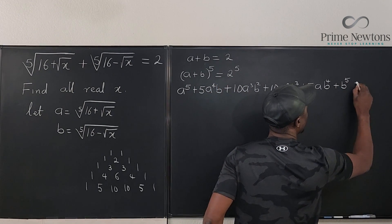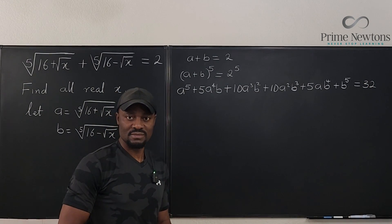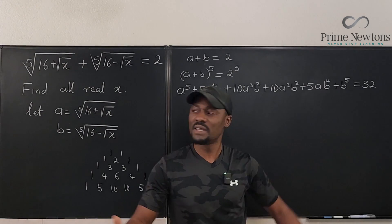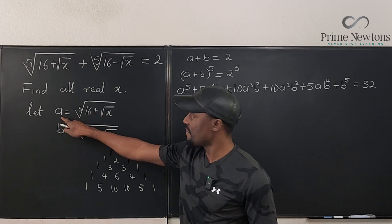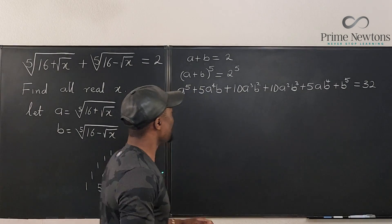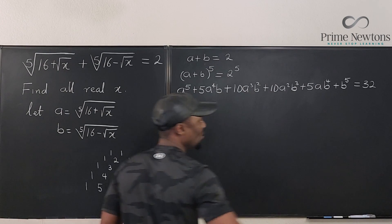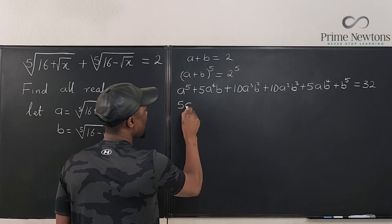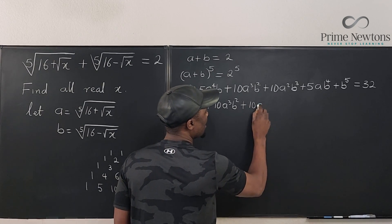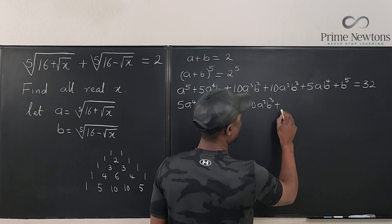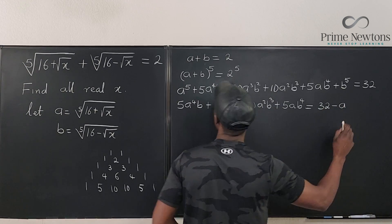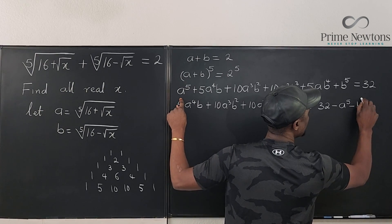That's our expansion. This helps because I know the values of a^5 and b^5. If I raise the definition of a to the fifth power, the radical disappears and I'm left with 16 plus the square root of x. So I can move a^5 and b^5 over to the right side, giving: 5a^4·b + 10a^3·b^2 + 10a^2·b^3 + 5a·b^4 = 32 − a^5 − b^5.